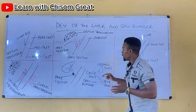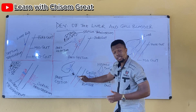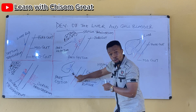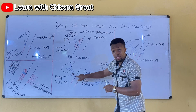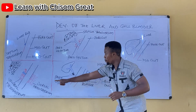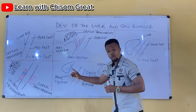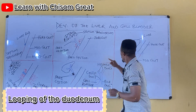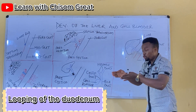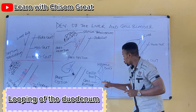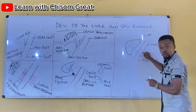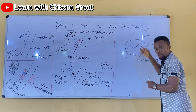If you notice, the bile duct opens into the ventral aspect because this foregut gave rise to the duodenum. Initially, the liver bud was growing on the ventral aspect — remember the ventral mesogastrium. But after the looping of the duodenum, it comes to lie on the dorsomedial aspect. After the development and looping of the duodenum, this liver bud that eventually gave rise to the bile duct now opens into the dorsomedial aspect of the duodenum.